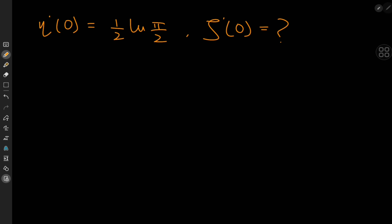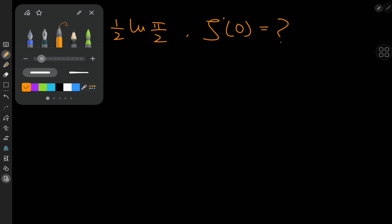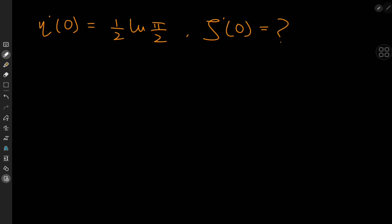Now what about the derivative of the zeta function at 0? It's time to reference the beautiful functional equation relating the eta and zeta functions: η(s) = (1 − 2^(1−s)) · ζ(s).